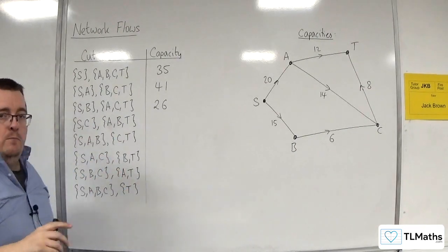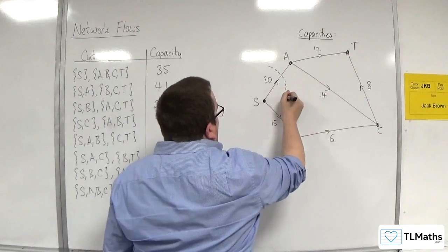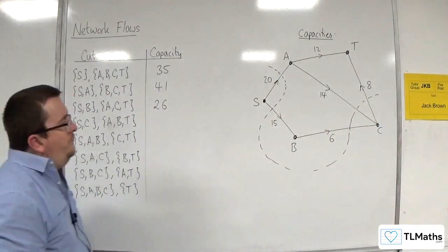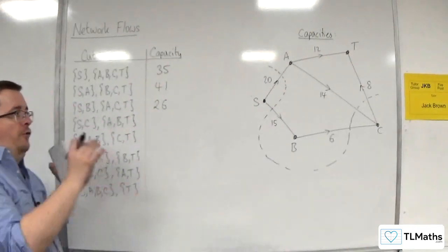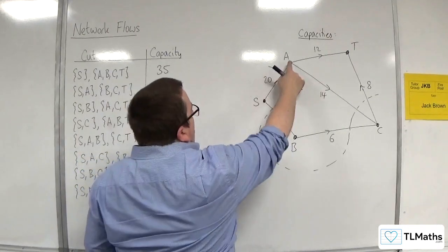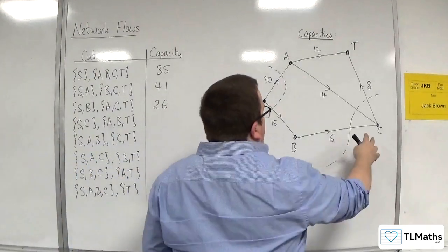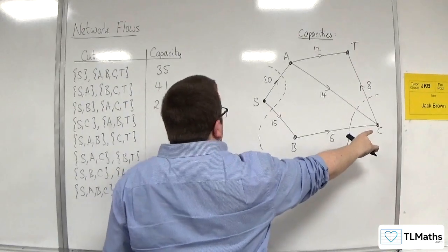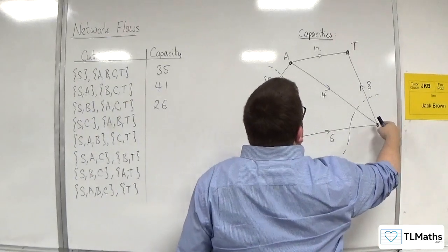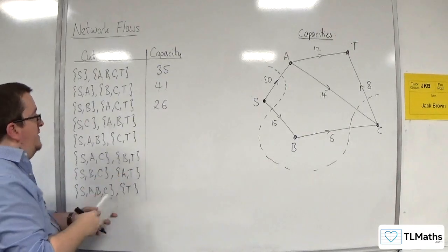S, C — now that one's a little bit more difficult to visualise. It's going to be cutting round here, so I'll draw that one on. Remember, we are looking for edges going from the source set to the sink set. You've got S going to A and S going to B, so 20 plus 15. B to C isn't going from source to sink — that's going from sink to source. So the only one we include is C to T, which is 8. So 20 plus 15 plus 8 is 43.